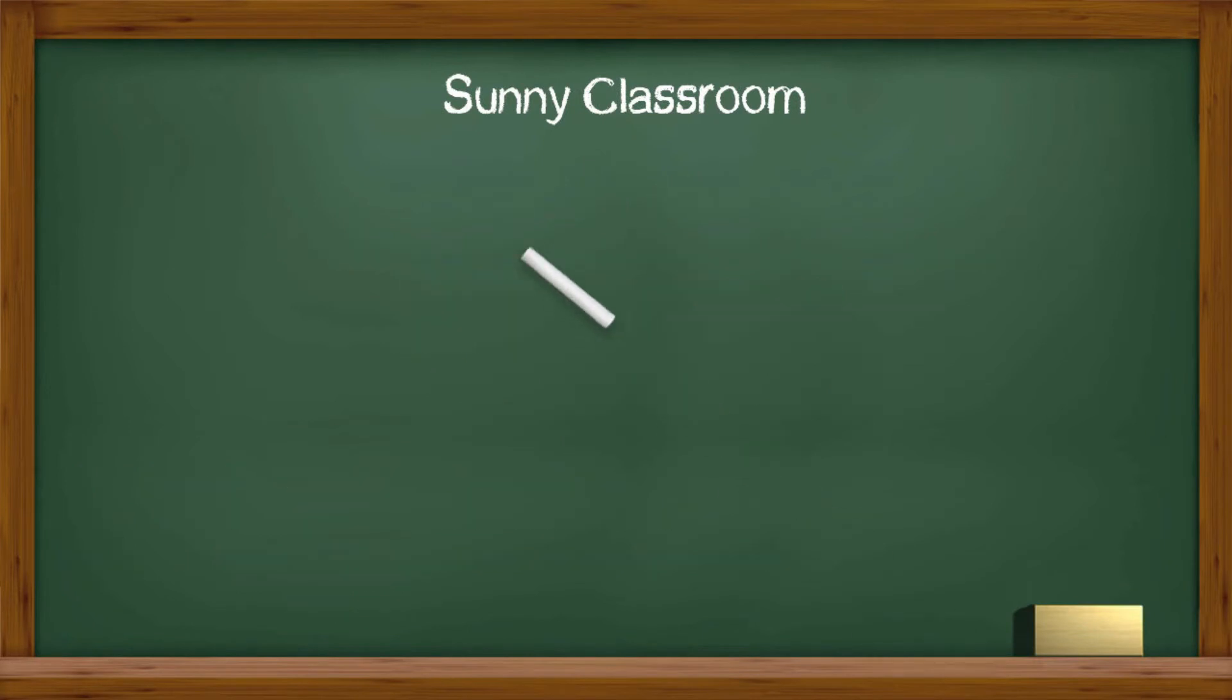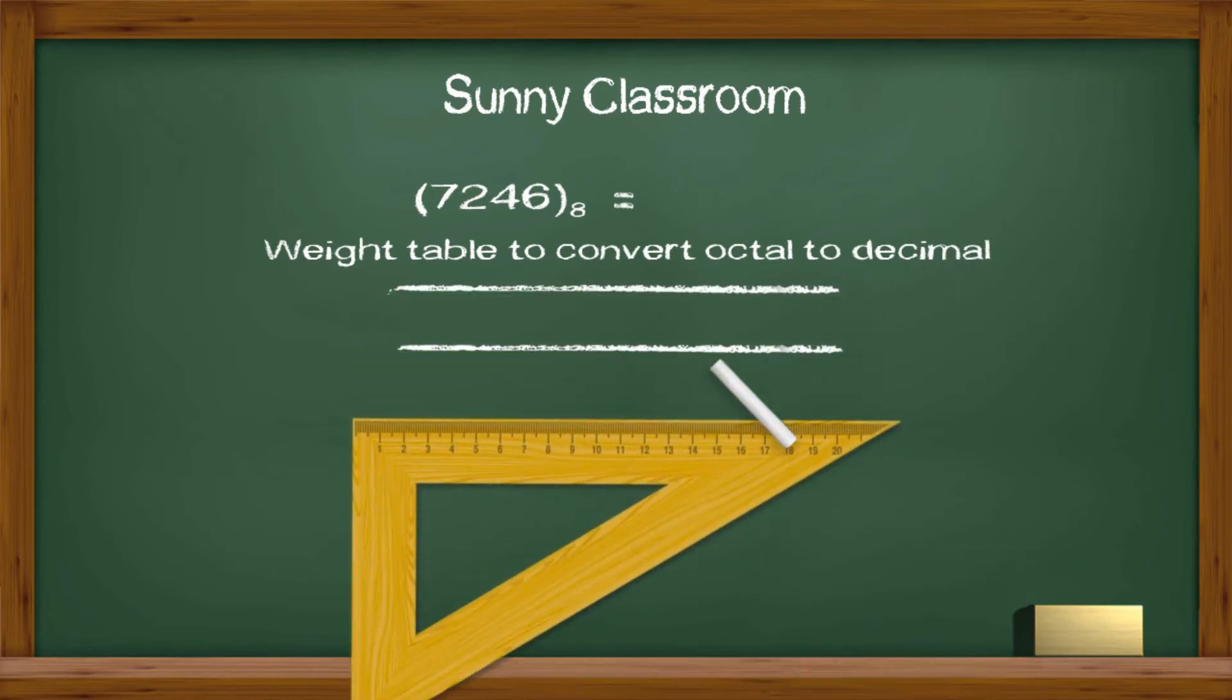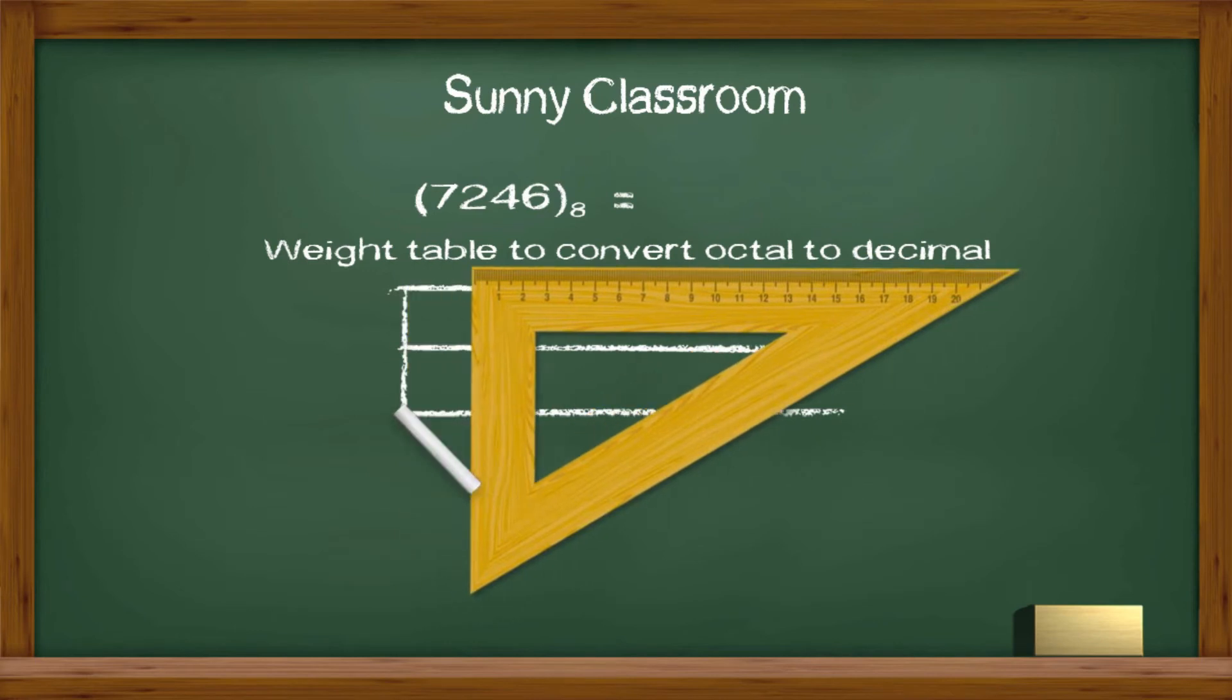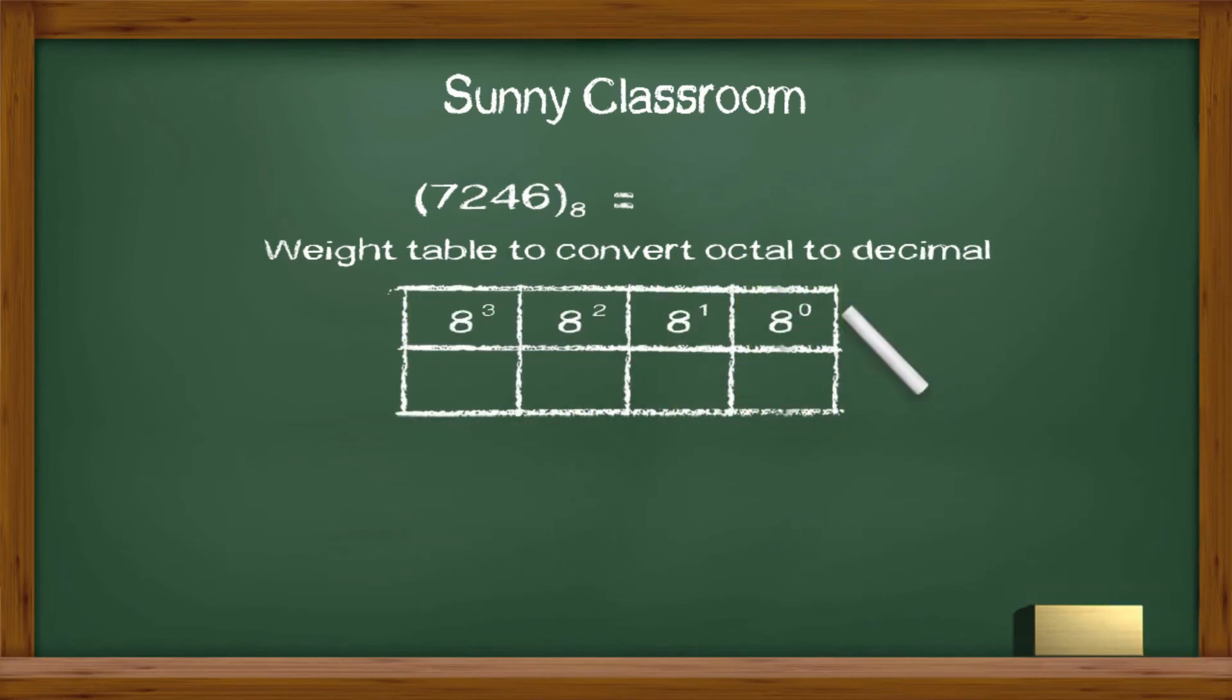Let's see example 2. Convert octal number 7246 to decimal. Again, we will draw a weight table, which we will use. We need a 4 column table, because we will convert a 4 digit long octal. We write down 7246 under the table, making sure they match their positions. Now let's do it.